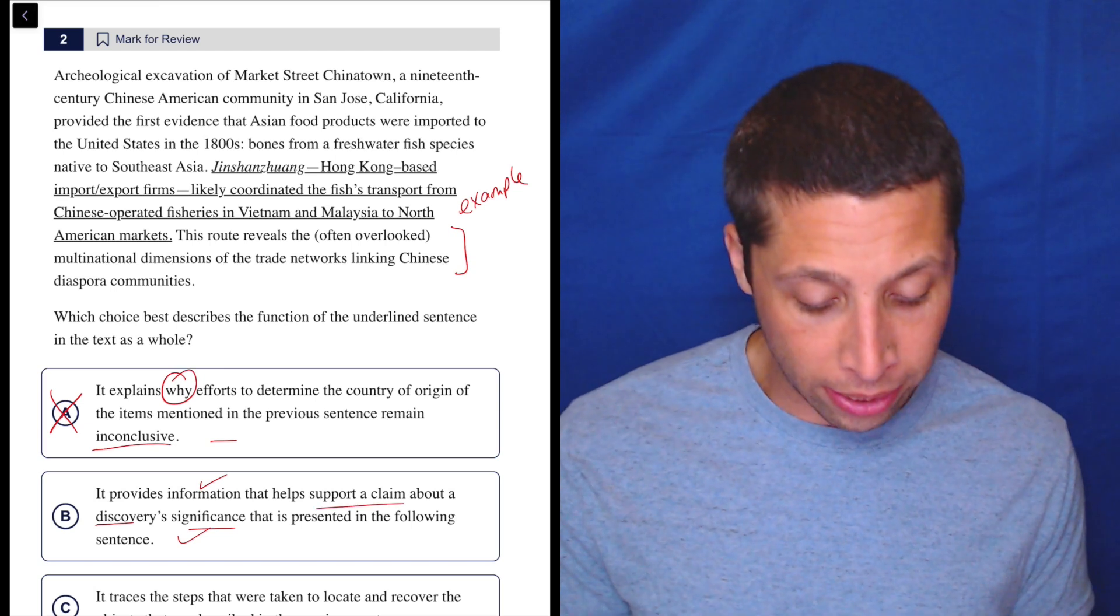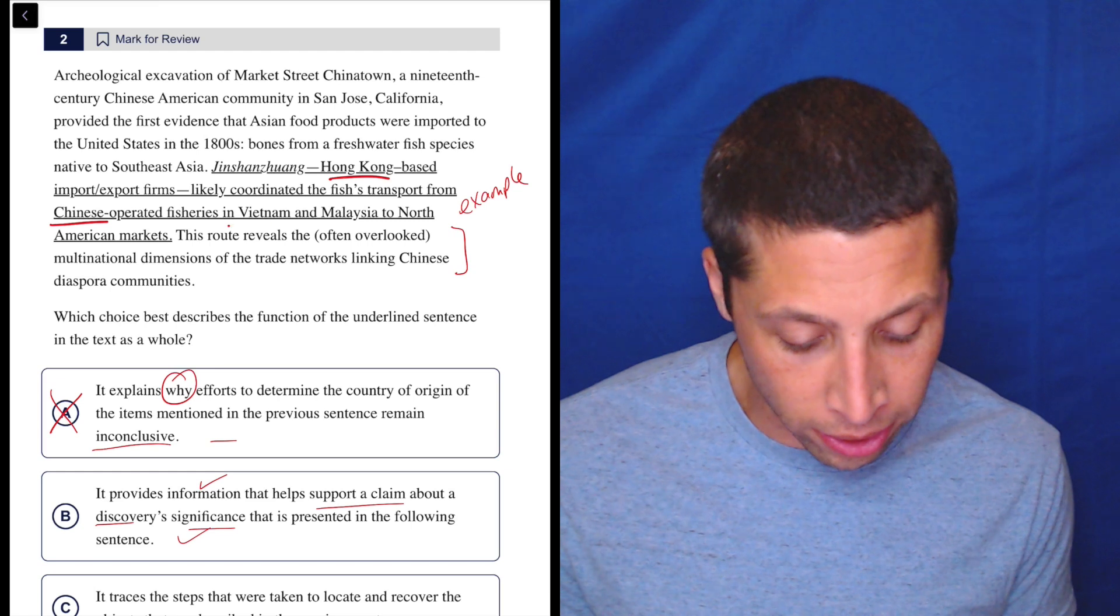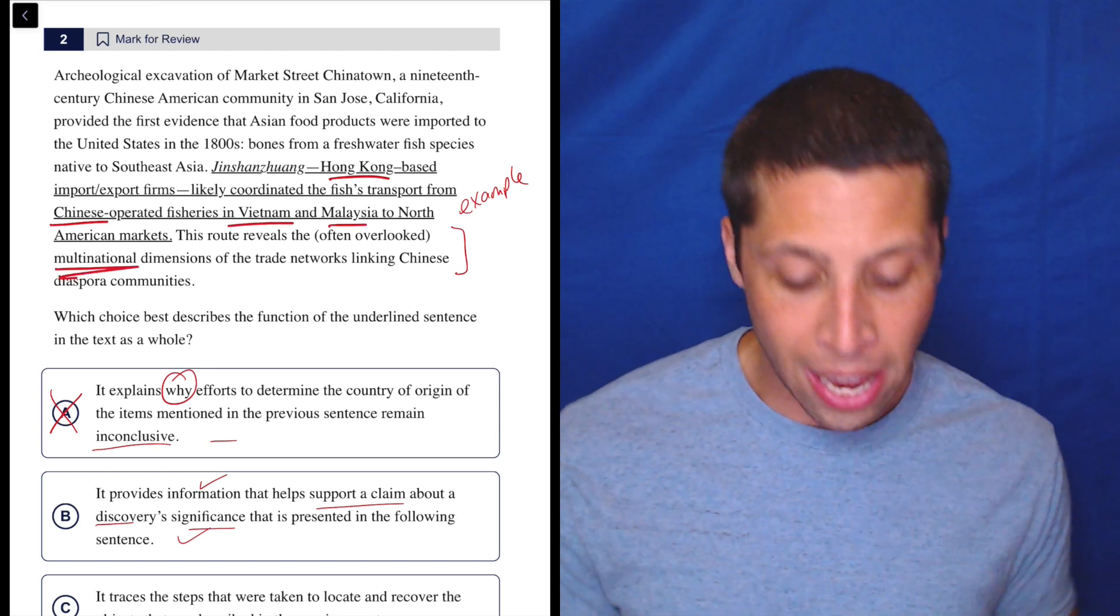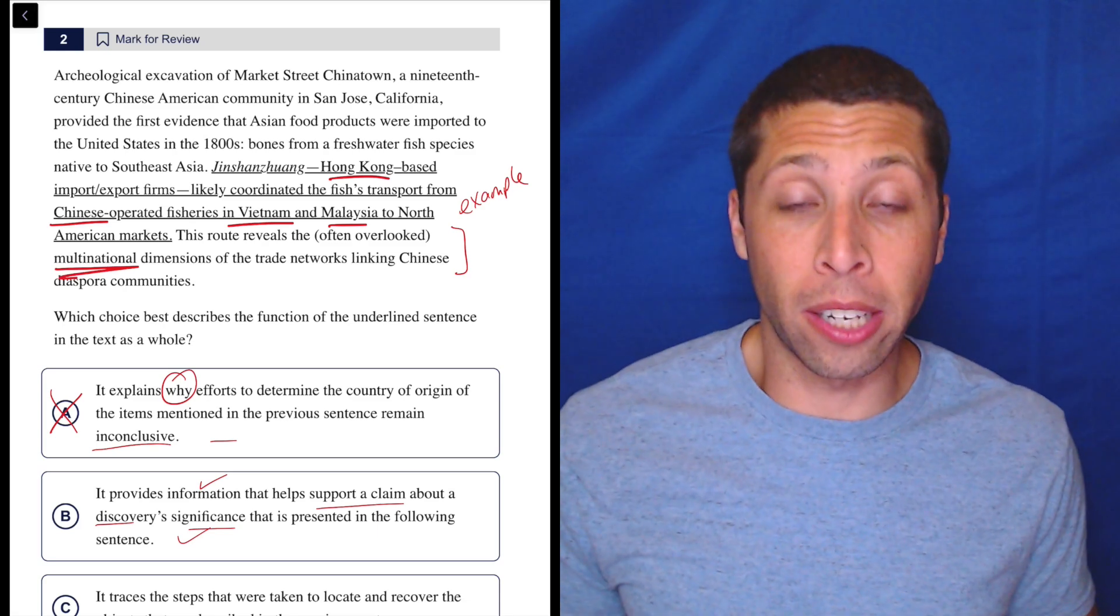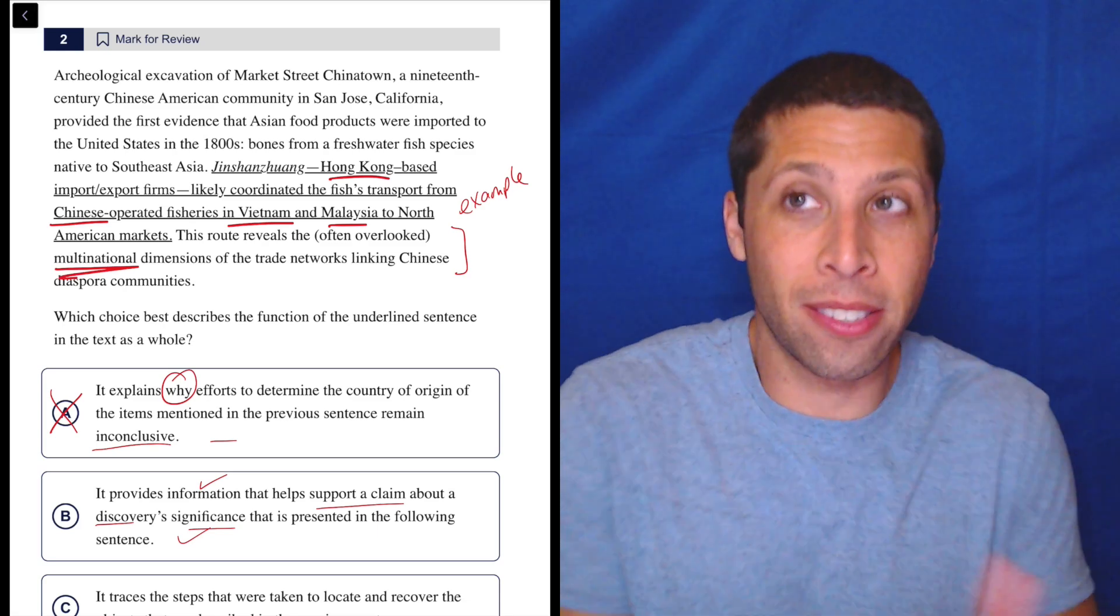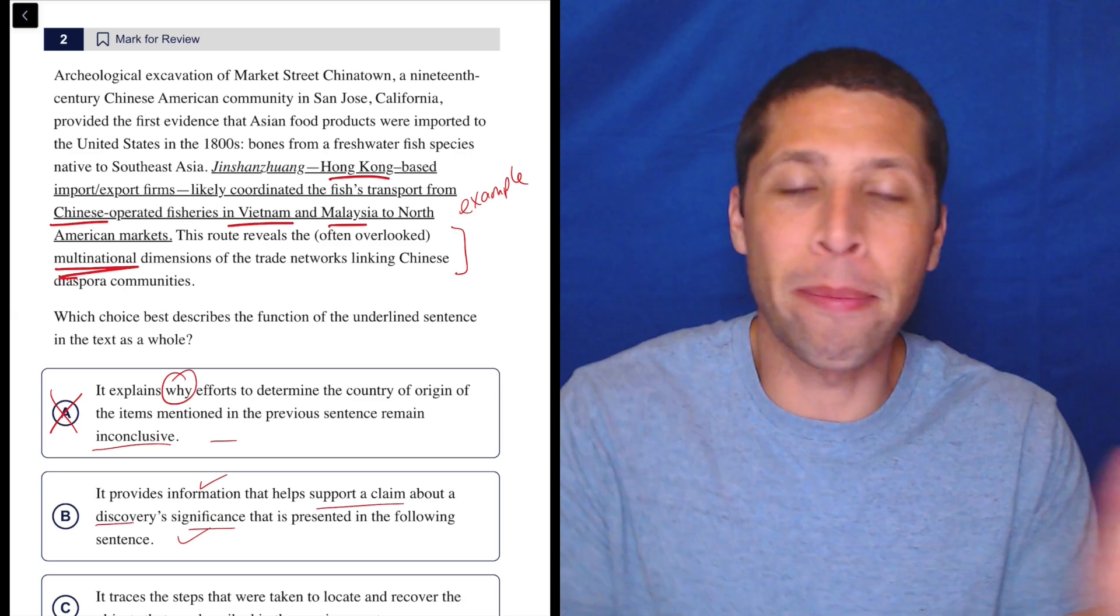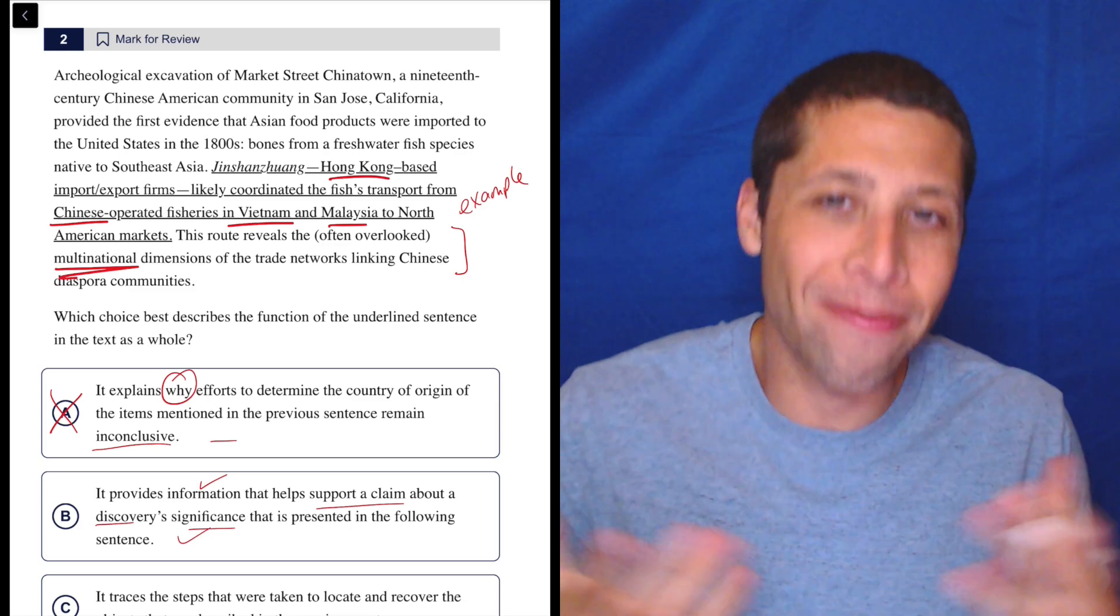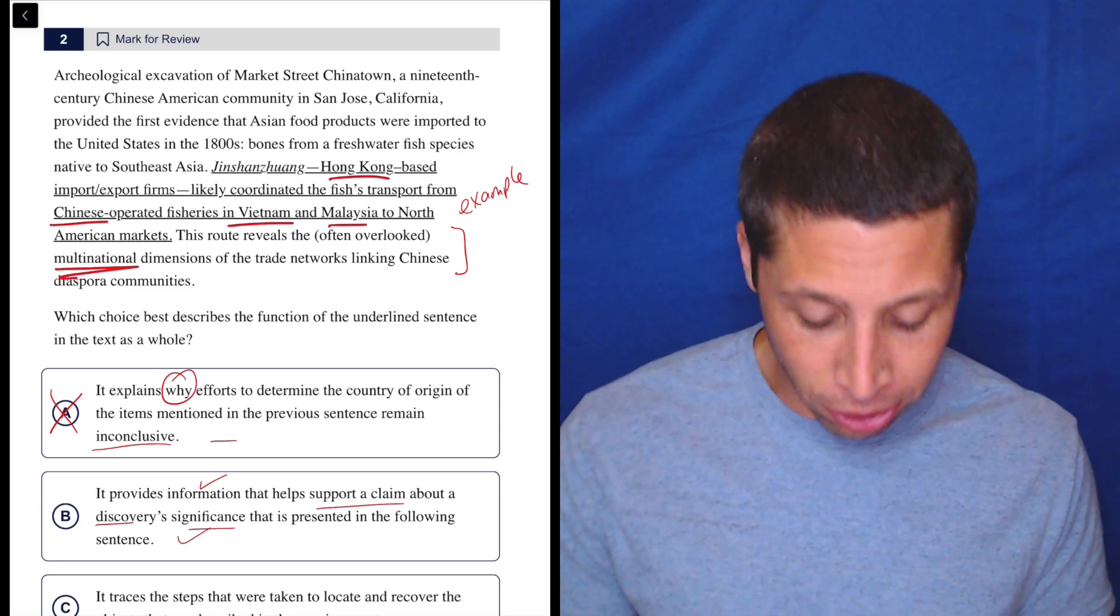So I can kind of answer that question there. Does it help support that claim? Well, it's saying that you've got people from Hong Kong, China, Vietnam, Malaysia. So I guess it's showing us an example or evidence that it is multinational. I feel like I'm stretching it a little bit, but at the same time, the words in the choice are so vague that it's easy to make things fit. And again, that might seem like a red flag, but I haven't proven anything wrong. It seems like I'm checking off all these parts.